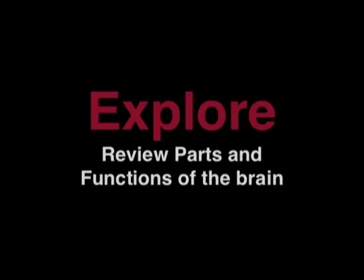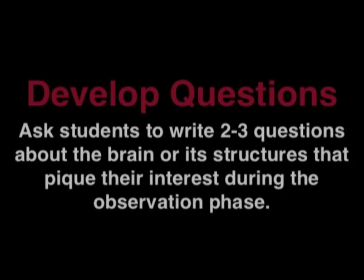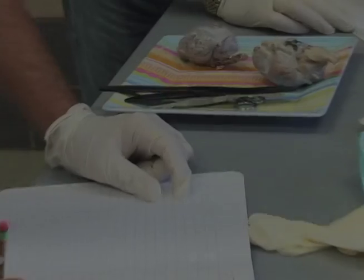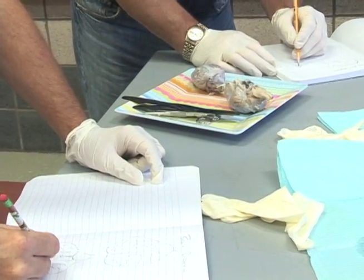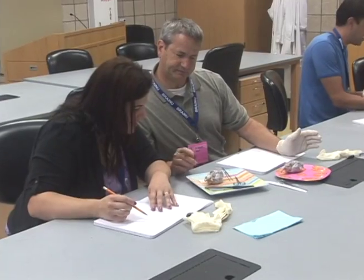I want you to make observations and drawings in your notebooks of what the whole sheep brain looks like. Identify what you can on the surface from the whole sheep brain — drawing, observing, and figuring out what you can right now. Look at them. What do you see? What do you find? What does it look like? No cutting. I want you to draw and sketch what you see.